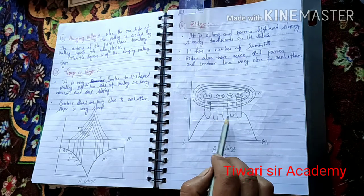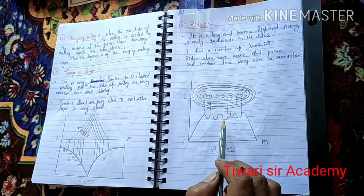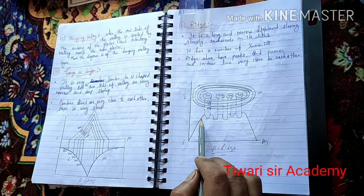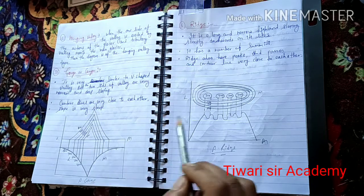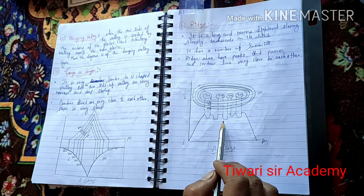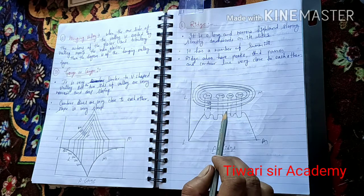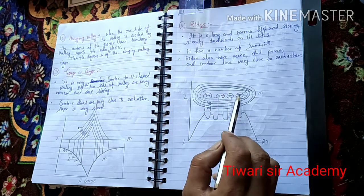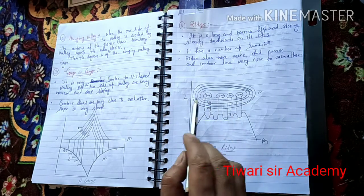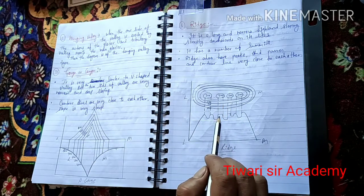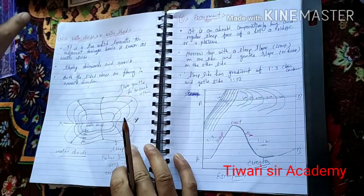Ridge has various summits — peaks, passes, and mountains. Ridge is similar to the U-strip valley, just as gorge is similar to the V-strip valley. The contour lines are very close to each other, for example, 700, 600, 500, and 400. This diagram represents the ridge.